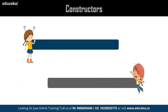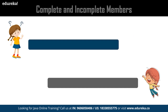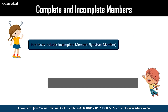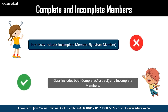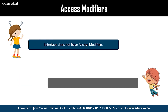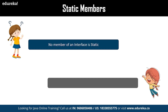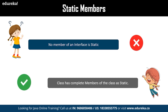The next difference is constructors — interface does not have constructors, while classes take advantage of them to set values to the members of an object. Next, complete and incomplete members — interfaces comprise only methods, giving them only signature methods. Classes include both data members (abstract members) and methods (signature members). Regarding access modifiers, interfaces use public by default, whereas classes provide private access modifiers not available in interfaces. Finally, static members — interface cannot have any static members, whereas a class has all its members as static.